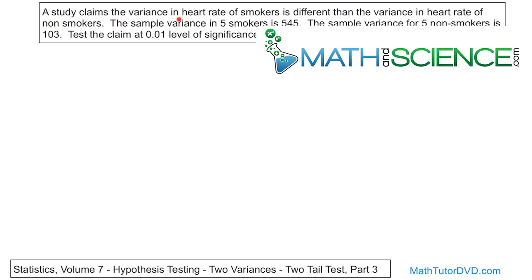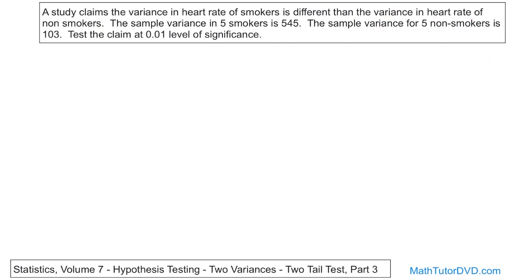A study claims that the variance in the heart rate of smokers is different than the variance in the heart rate of non-smokers. The sample variance in five smokers is calculated and we get 545. The sample variance in five non-smokers is 103. Test the claim at a 0.01 level of significance.